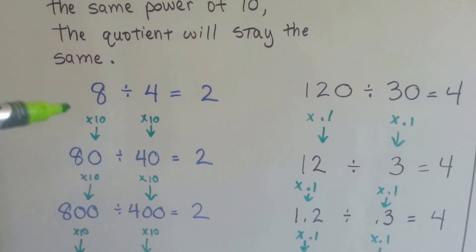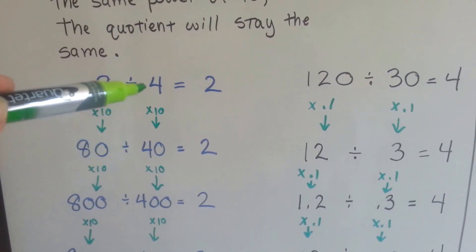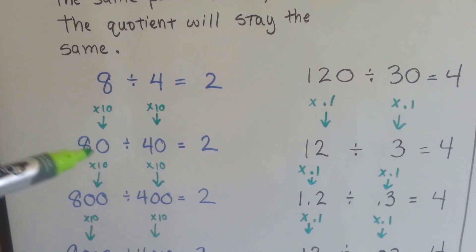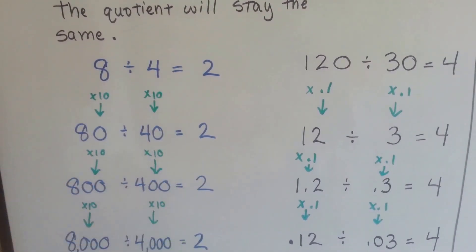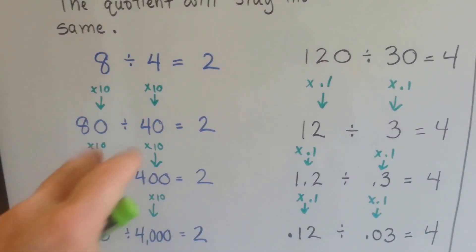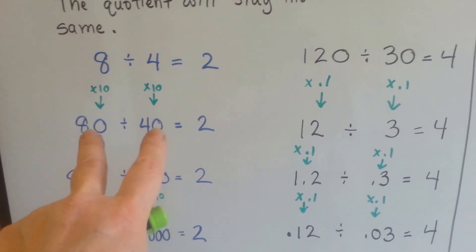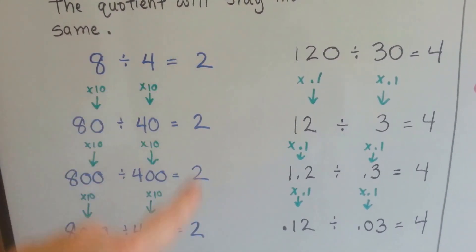We have 8 divided by 4 is 2, and if we multiply 8 times 10 to 80 and 4 times 10 to 40, 80 divided by 40 is still 2. So no matter how many times we multiply both of these by 10, because we're multiplying both of them by 10, we're increasing both of them together by the same power of 10, the quotient is going to stay the same.